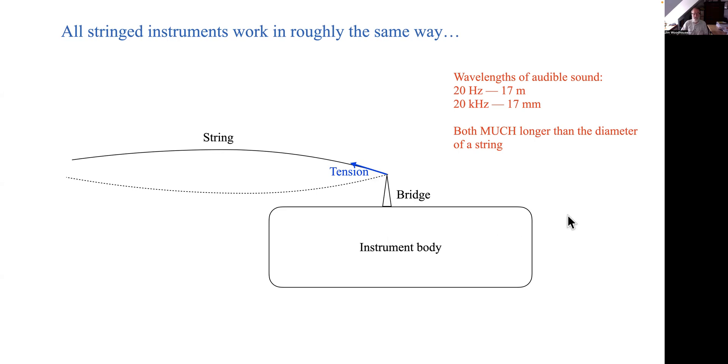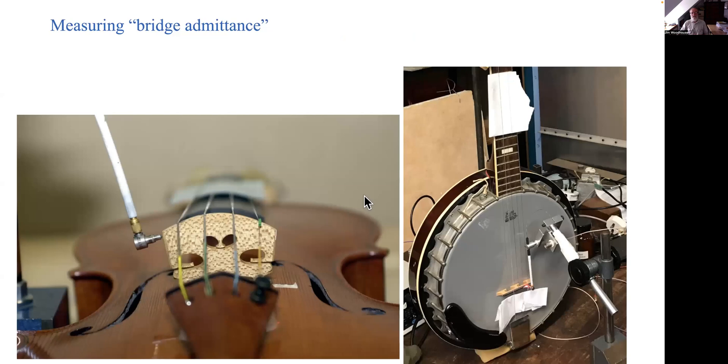So as instrument makers you're interested in exactly how that body vibrates. Different violins, different guitars will vibrate in subtly different ways and that is responsible for the differences of sound between those instruments. And this is where this frequency response function comes in.